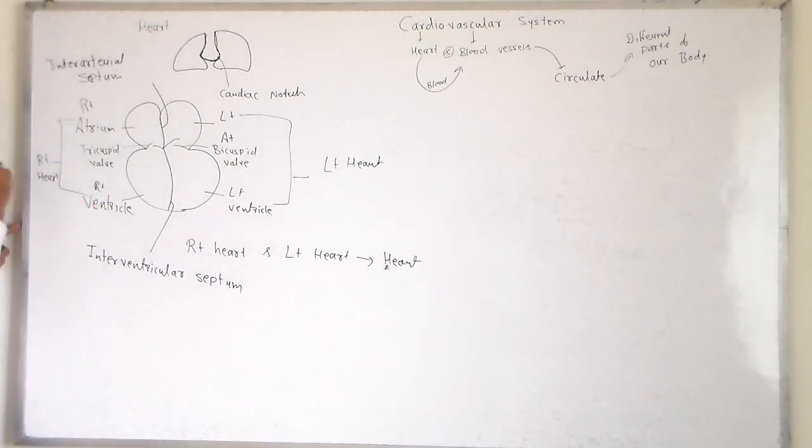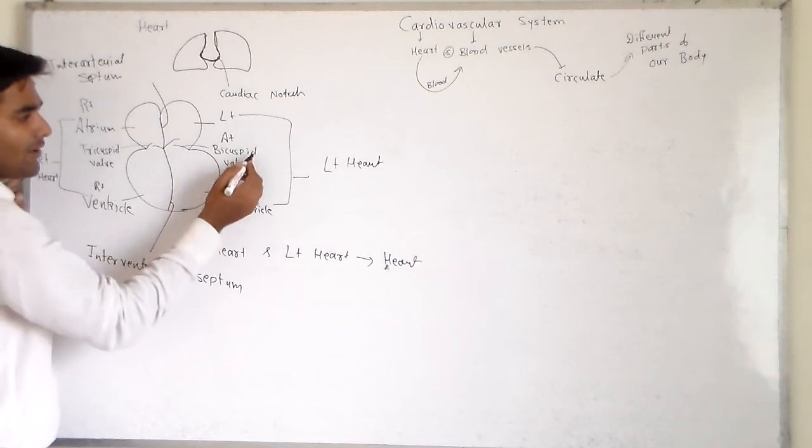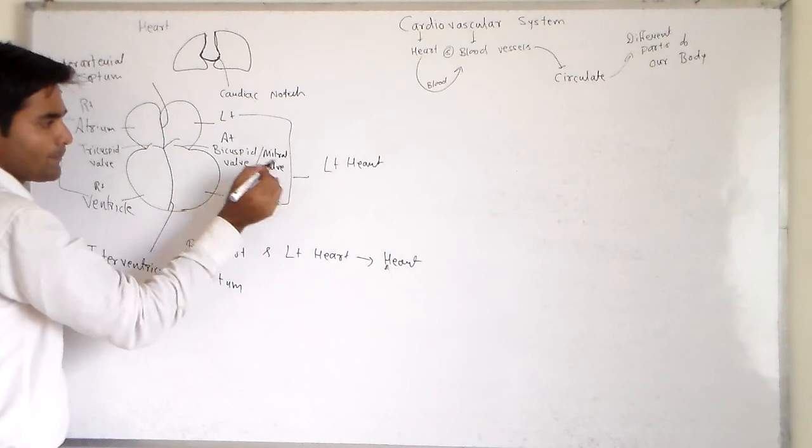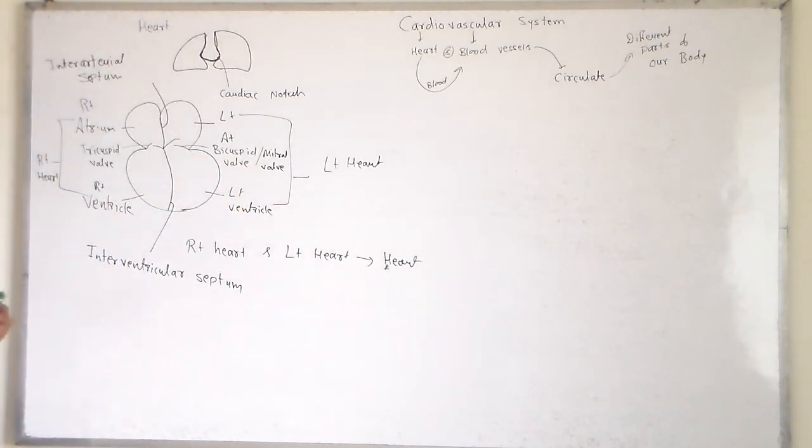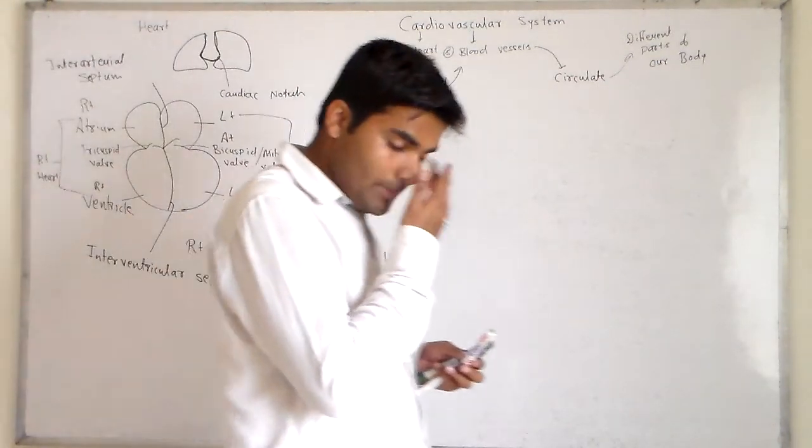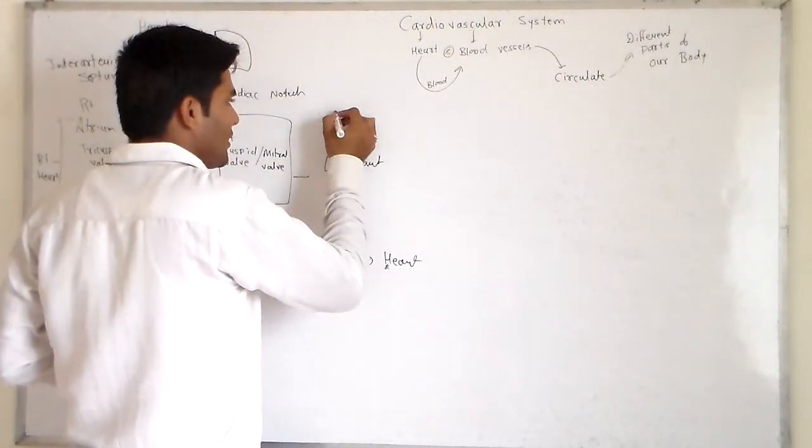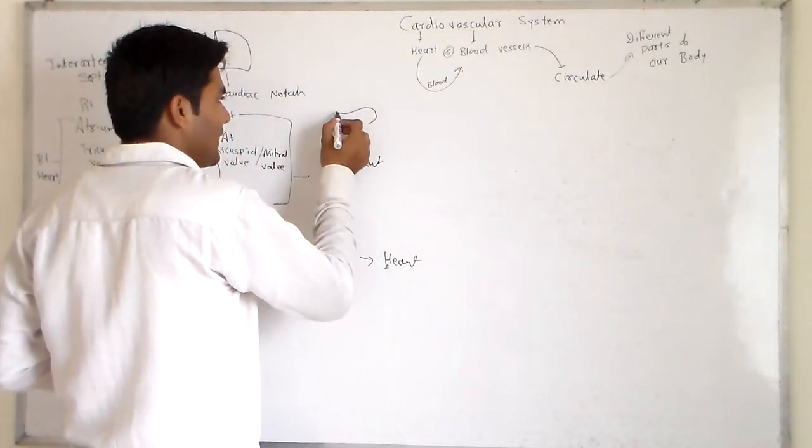Tricuspid valve. Why is this called tricuspid valve? Because it has three cusps. Cusp is just like that. Mitral valve. Mitral valve. In mitral valve, you have bicuspid valve. Because it has two cusps. But just like that.